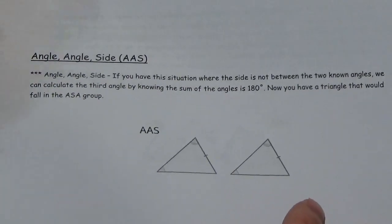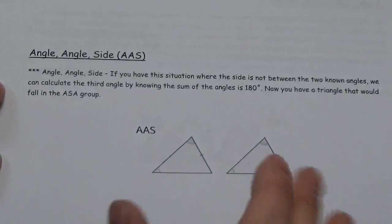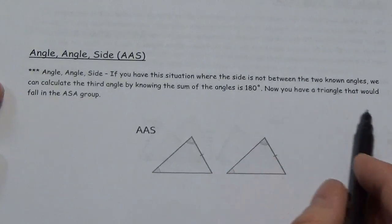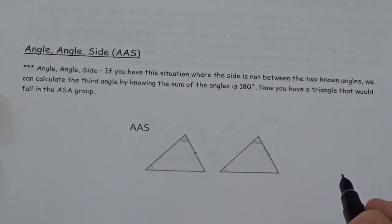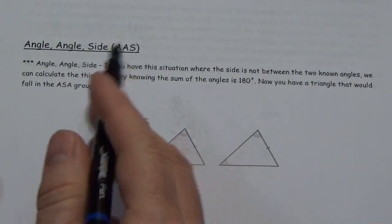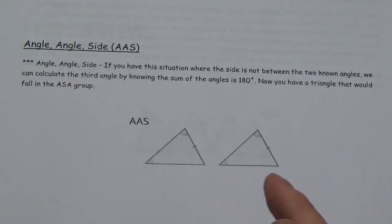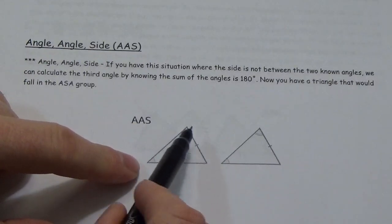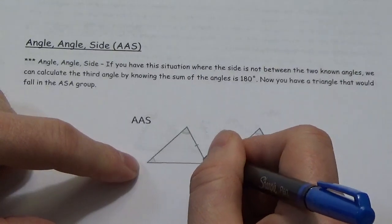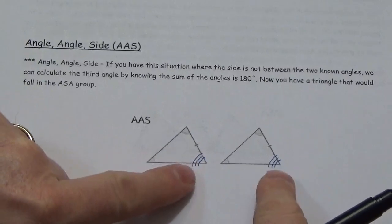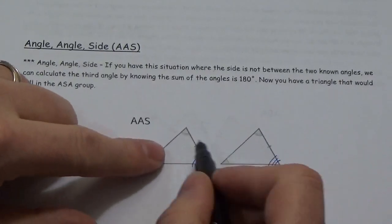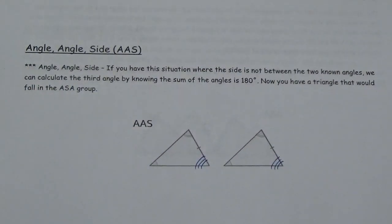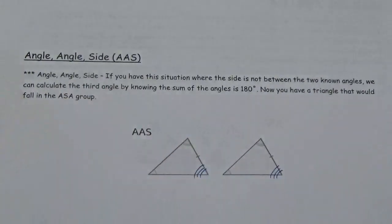There's also the angle-angle-side (AAS) postulate. If you have a situation where the side is not between the two known angles, you can calculate the third angle by knowing that the sum of angles in a triangle is 180 degrees. That means you now have a triangle that falls into the ASA group. If those two angles are the same in both triangles, then the third angle — the one left over — will also be the same in both, and the situation reduces to an angle-side-angle relationship. So AAS is really just a special case of ASA.